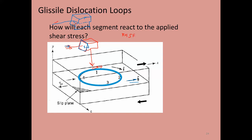Knowing the direction of the dislocation line at this point is to the right, and the Burgers circuit should look like this — I'll call this my start, apply the right-hand rule, move clockwise, and the Burgers vector goes from start to finish. So this picture is correct.